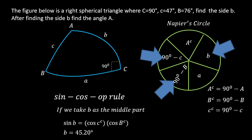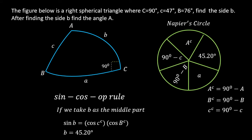We have now found side B = 45.20 degrees. The next part asks us to find angle A. I will substitute B with 45.20 degrees, and replace the A complement with 90 degrees minus A so that I can solve for A. We now need to choose the best rule to find angle A.